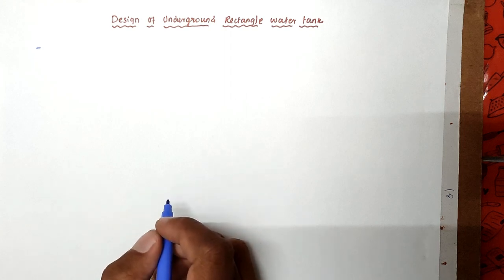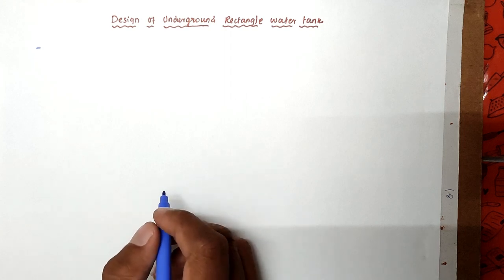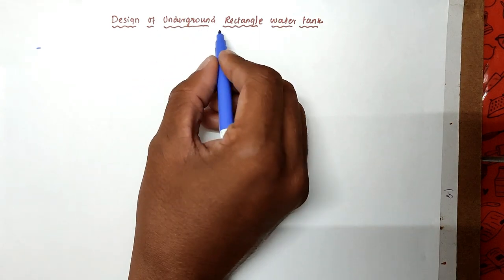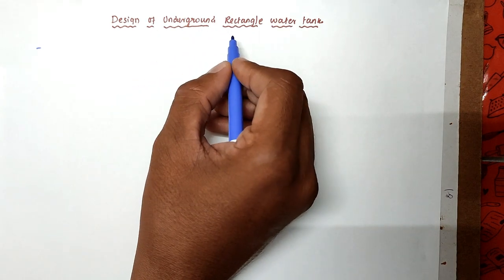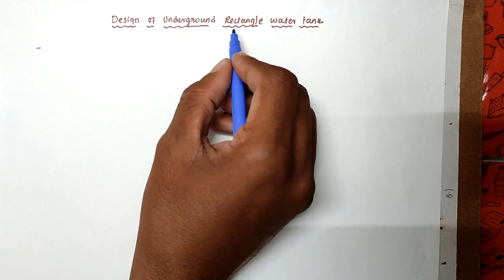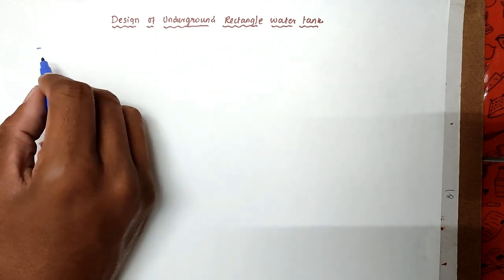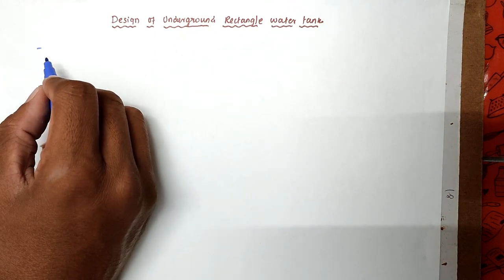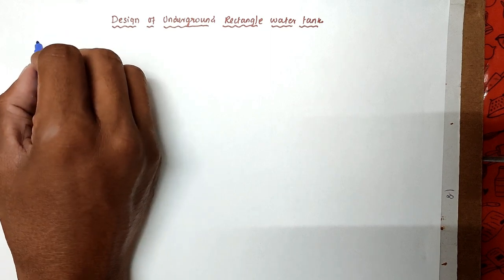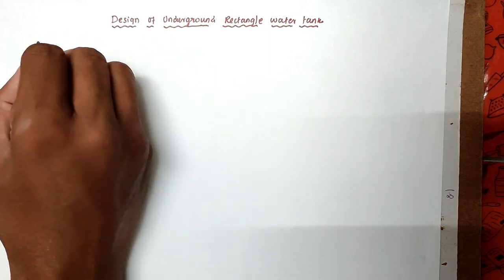Hello friends, welcome to Civil Engineering Exam. Today we are going to see the design procedure of an underground rectangular water tank. We have to know the procedure, and in that procedure, first we have to know the components of an underground water tank.